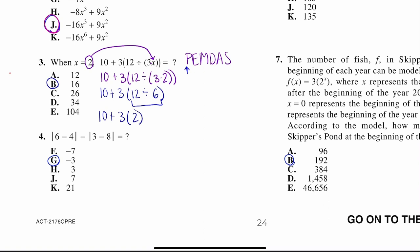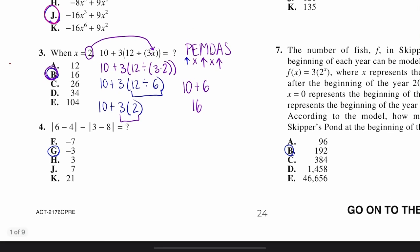I have no exponent. And I have multiplication. 3 times 2 is 6. I don't have division, but I have addition. 10 plus 6 is 16, which gets us letter B. Awesome.